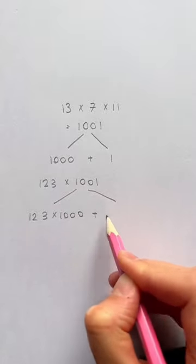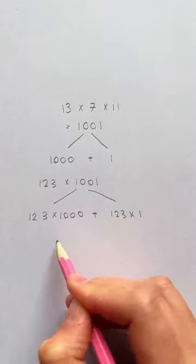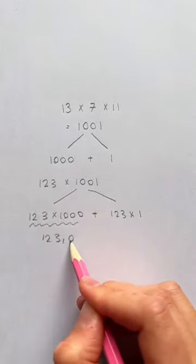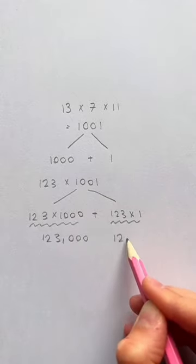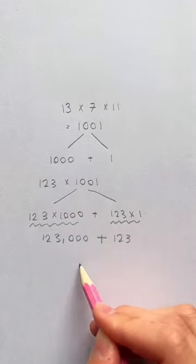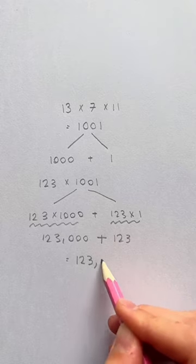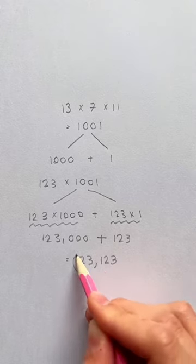it's the same as 123 times 1,000 plus 123 times 1. So this becomes 123,000 and this is 123. And adding these two together, we get 123,123. And that's how it works.